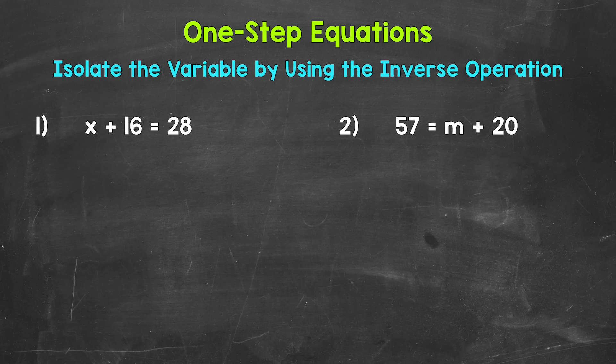When we solve one-step equations, we want to isolate the variable, which means get it by itself. Basically, we want to undo whatever is being done to the variable. That way, the variable is by itself on one side of the equation. We do this by using the inverse or opposite operation. Keep in mind, it is very important that whatever is done to one side of the equation, it must be done to the other. That keeps everything balanced and equal.